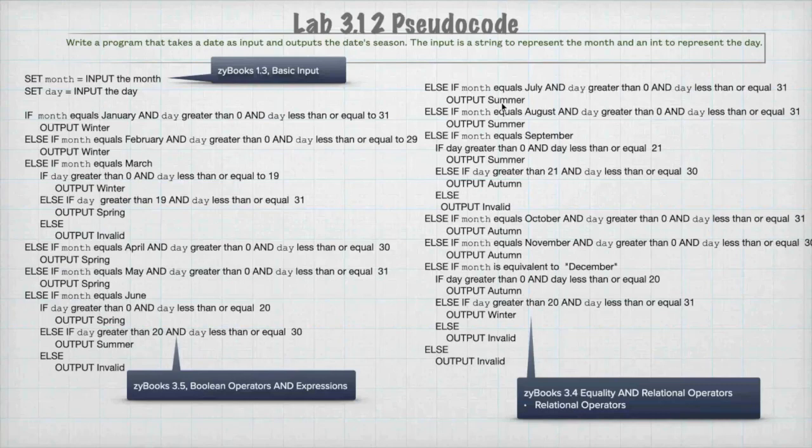Months that split, where the season splits the month, you're going to first determine that it's that month. You're going to have a statement that's looking just for the month. And then inside that, you're going to have an if, an else if, and an else. The if is going to check the lower and upper bounds for one season. The else if is going to check the lower and upper bounds for the next season. And the else is going to say, sorry, it's invalid. You put in, you know, minus 100 for the day. So, that is what you want to do for 3.12.